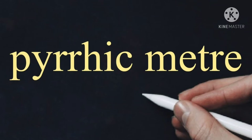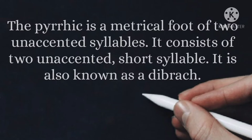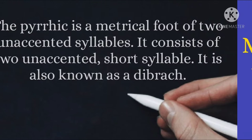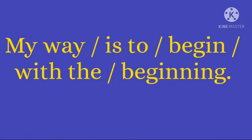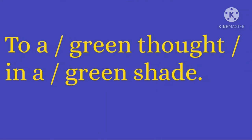Now, Pyrrhic meter. Pyrrhic is a metrical foot of two unaccented, meaning two short syllables. It is also known as di-brach. Here are two examples: first, 'my way is to begin with the beginning' — here all of the sounds are short or unaccented. Second example: 'to a green thought in a green shade' — again, all of the sounds are short or unaccented, so we call it Pyrrhic meter.